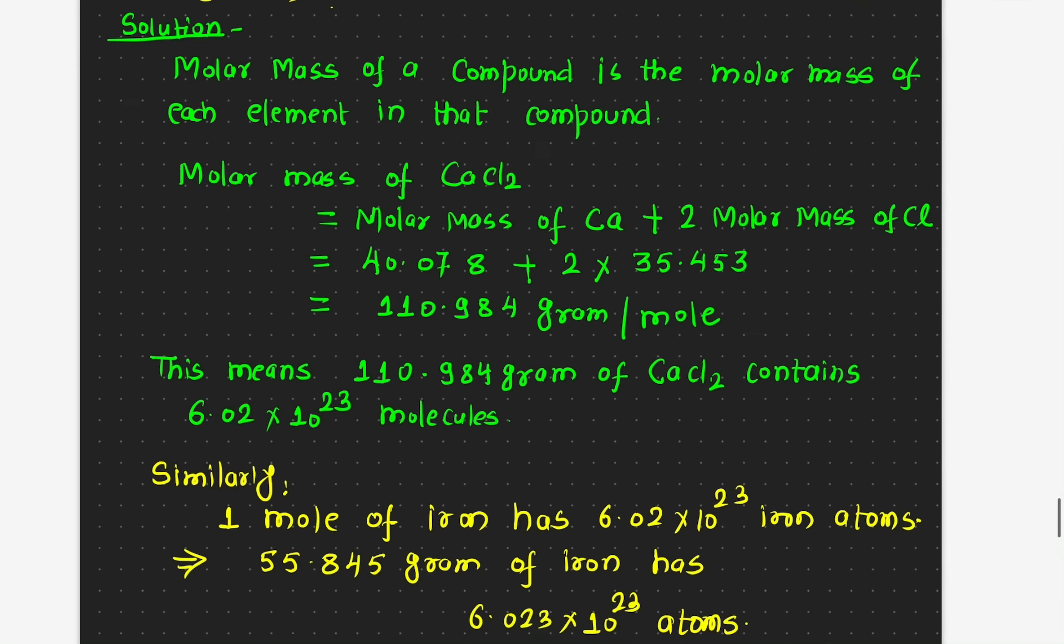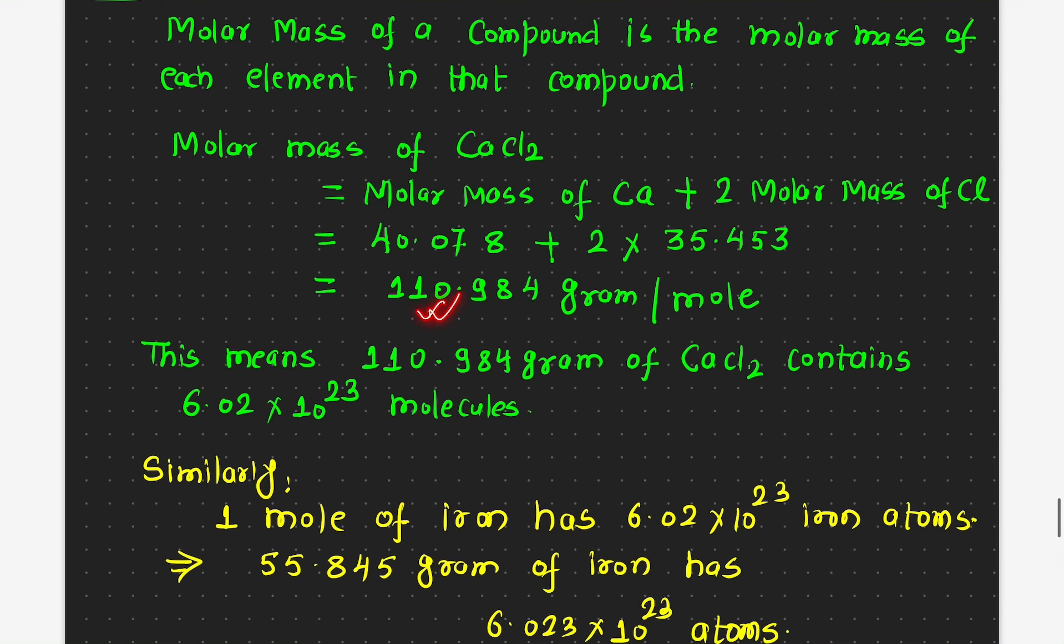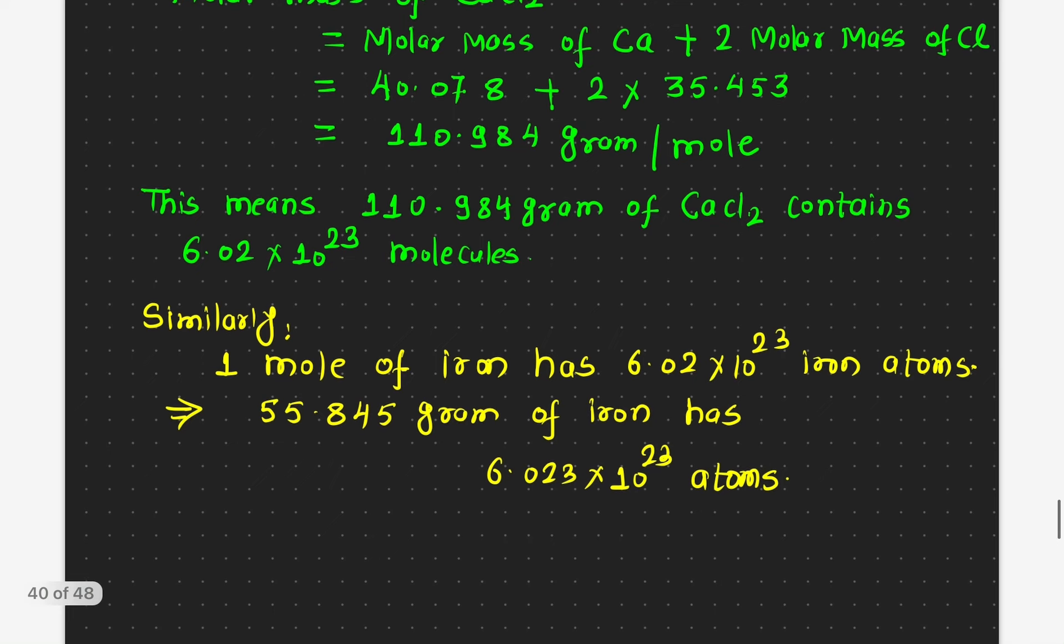That's what I have written: 110.98 grams of calcium chloride means this many molecules. That's what it is asking. What is the molar mass? So the molar mass in this case is 110.98.